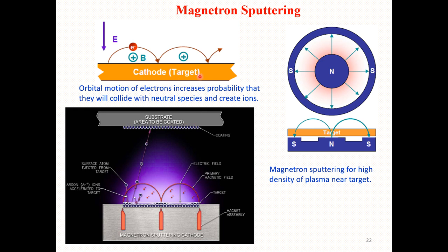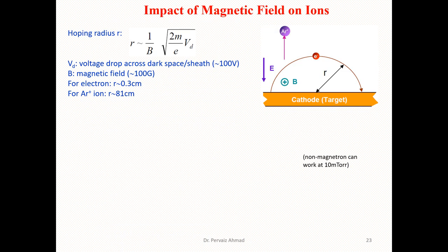At the cathode target, a perpendicular magnetic field is applied. This causes electrons to move in spiral or orbital motion, increasing their collisions with neutral species and creating ions. The applied magnetic field causes electrons to spiral in almost circular trajectories, producing a high density plasma near the target.